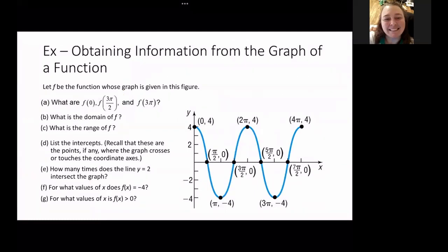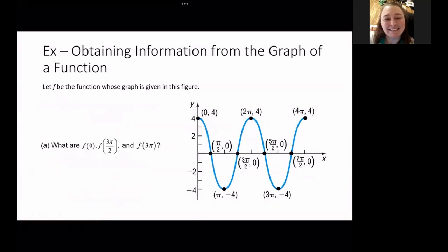First of all, we are going to find three values at some given numbers. We're going to look at the domain and the range of it, the intercepts, and how many times does it cross a specific line. And for what values does it equal a specific thing or for what values is it greater than? Let's start off baby steps. Let's look at number A and isolate A here.